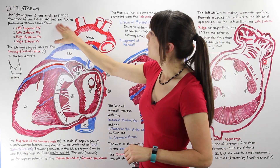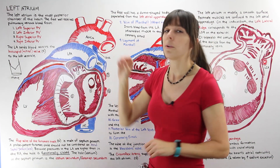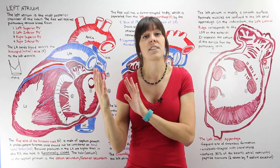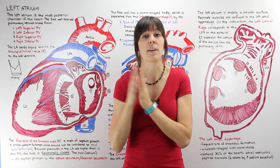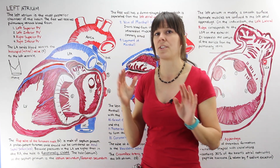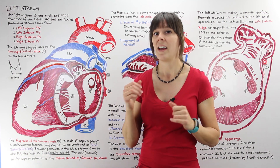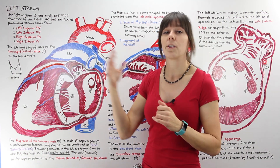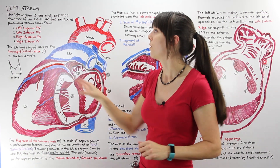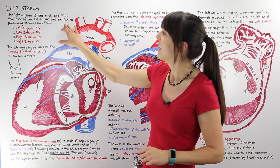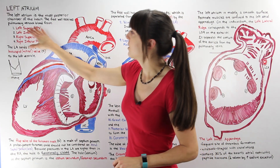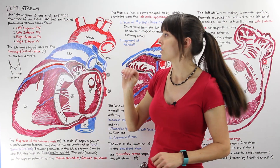The left atrium is connected to the right atrium by a double-walled septum, usually called the septal wall. The rest of the atrium that is not attached to that septal wall is called the free wall, and the free wall is the part that receives pulmonary venous blood from four sources.